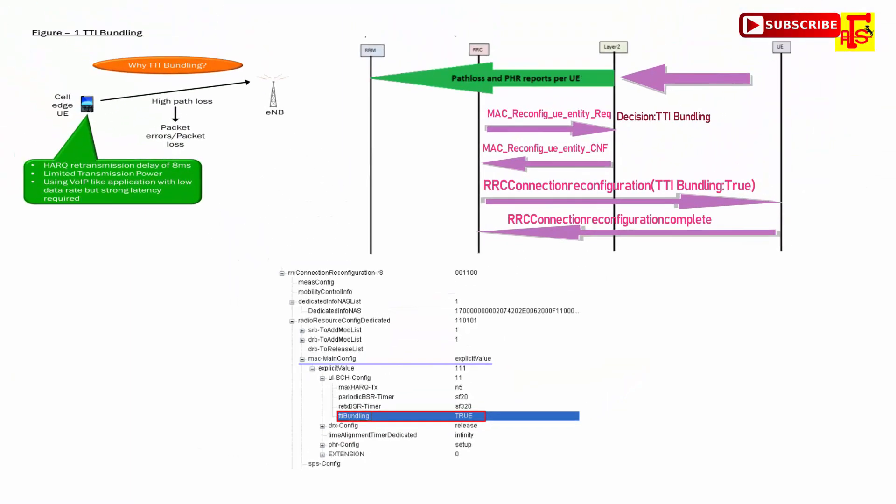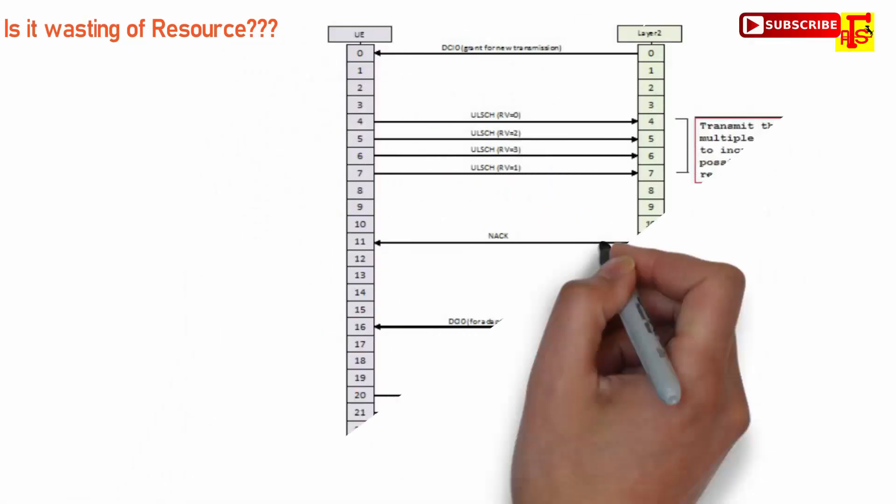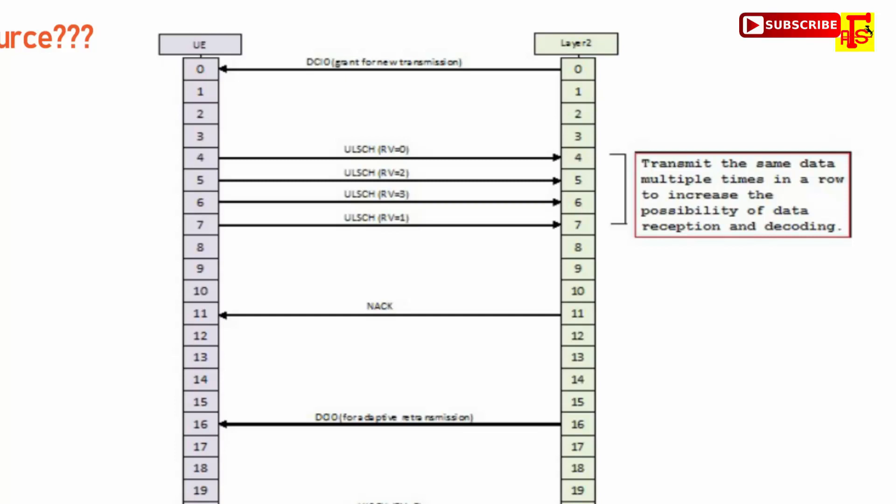In this example, we can see and you can say this is a kind of wasting of resources. Then why we need this kind of method? Simple answer is to increase the possibility of data reception at the destination. This means that in bad radio condition, same packet sent to four consecutive frames, and on receiver side the possibility of packet decoding will be improved.